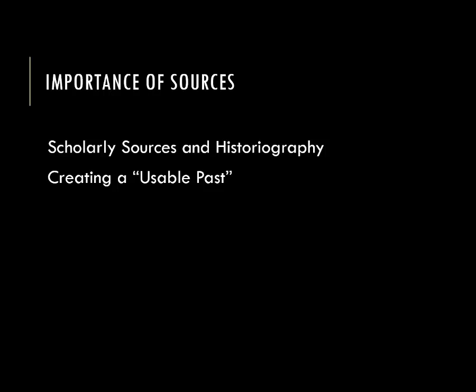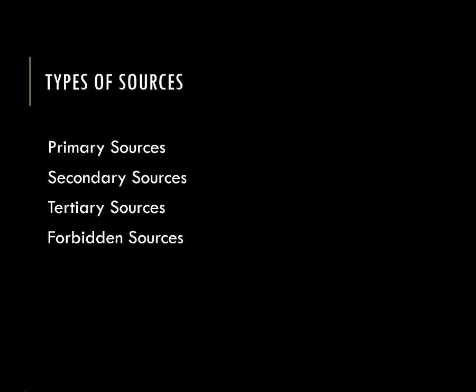Before we go much farther, we should discuss the kinds of sources historians use. As part of an AP course or a college-level course, you will come in contact with these sources directly and indirectly. For our purposes, I have divided sources into four categories: primary sources, secondary sources, tertiary sources, and forbidden sources. For scholars, the first two are the most important, but as high school students you will need to learn the value of these sources and why other sources are not as reliable. This will be knowledge you can take with you into your college career.